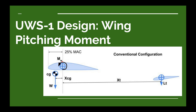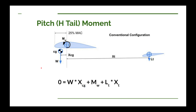Let's figure out why we want to know what that is. You may remember this slide from our last design video for the UWS-1 Ultralight, where we were talking about the weight, the center of gravity, and the reason we wanted to know that in figuring out the pitch moment for the horizontal tail. In that video, we only mentioned the pitch moment for the wing. In this video, we're going to go into detail on that.